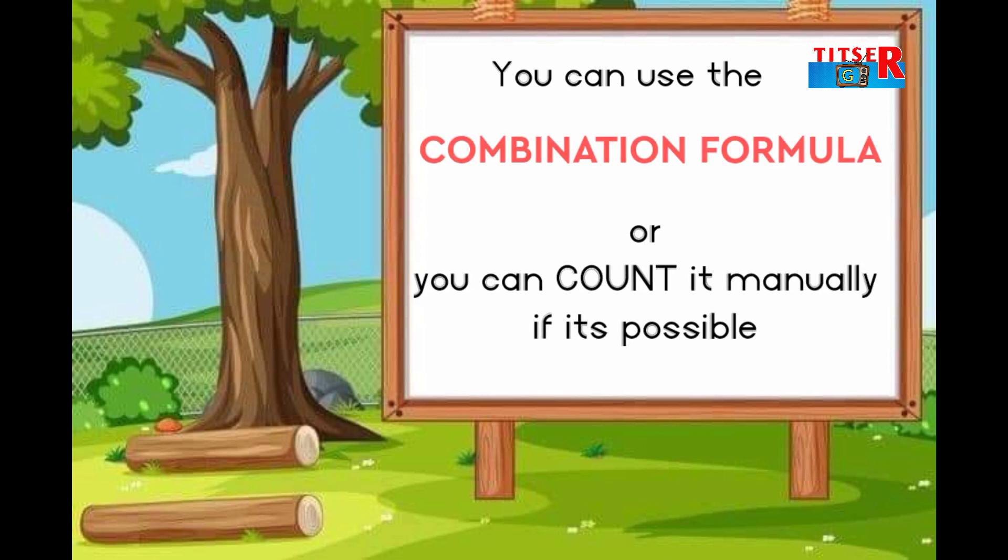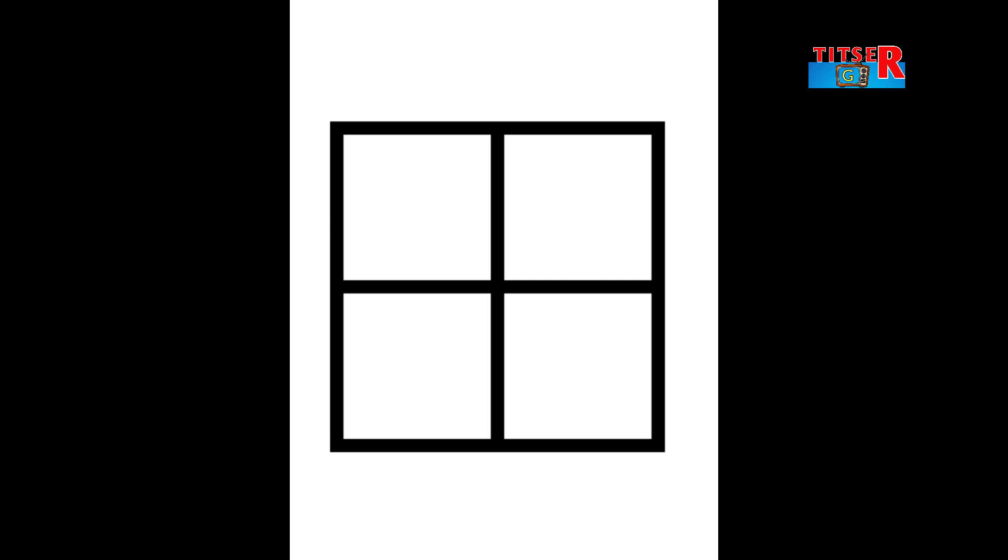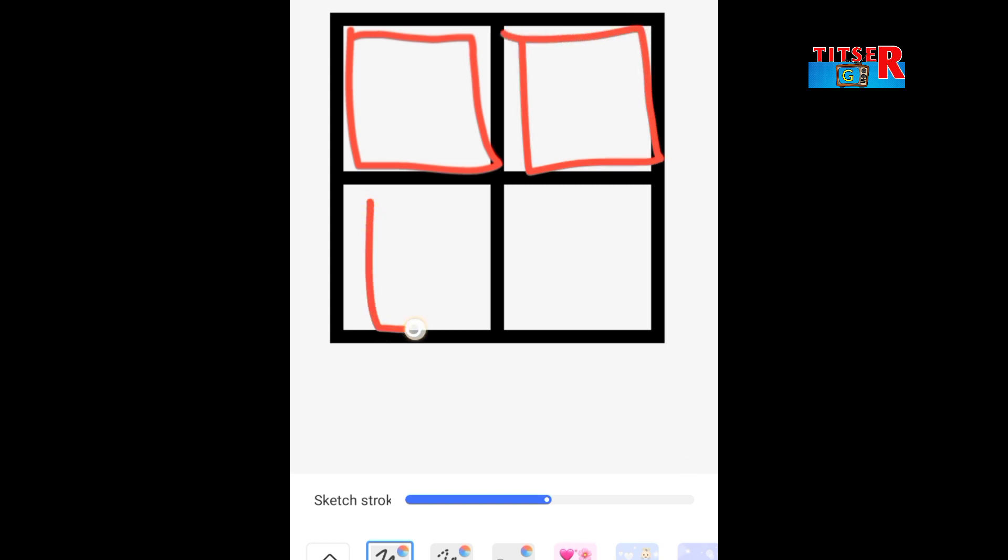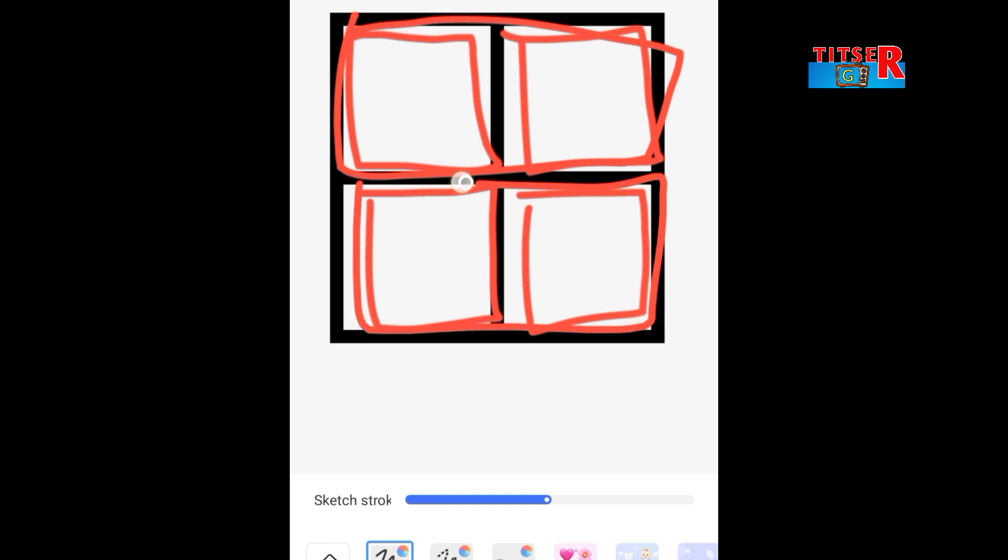In this example we have a 2×2 grid, so we can count the number of rectangles manually. Let's count: one, two, three, four, five, six, seven, eight, and the bigger one makes nine.